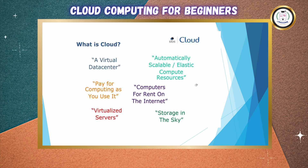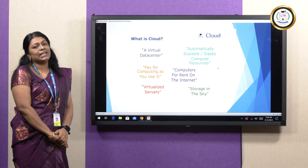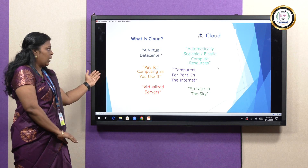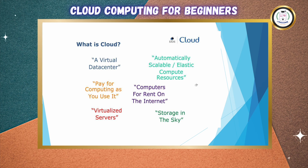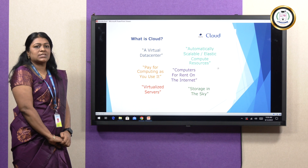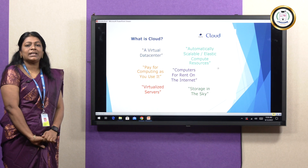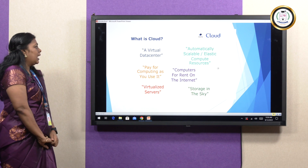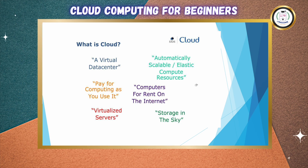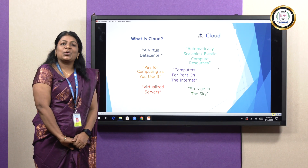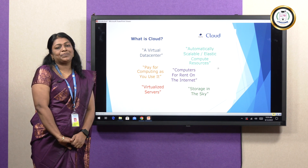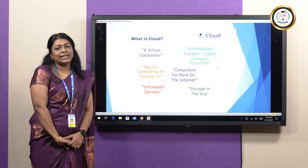What do you mean by cloud? Cloud is a virtual data center. All storage, memory, everything we will get from the internet — that is called cloud. Cloud is automatically scalable and elastic compute resources, so you can add or remove resources anytime you want. You pay for it like electricity — whatever you are using, you have to pay for it. You can rent computers on the internet, and these are virtualized services. This is simply called storage in the sky, because we are storing through the internet.